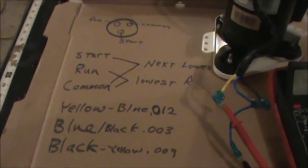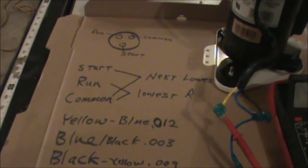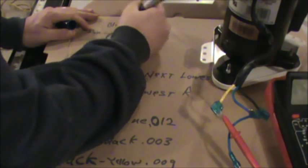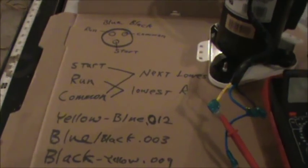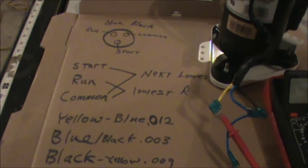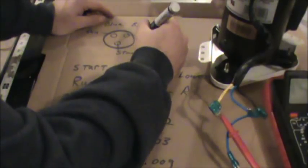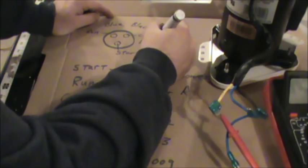We said that between run and common, that's going to be our lowest resistance. So we have blue and black, 0.003, that's our lowest resistance. So we're going to put those colors up top. We know that our lowest resistance goes between the run and the common, and the wire color was blue and black. And then we look at our next lowest resistance. Our next lowest resistance goes between start and common, and that's 0.009, black and yellow. So up here we know that these are going to be black, yellow.